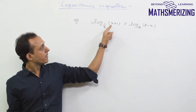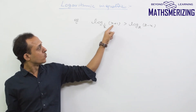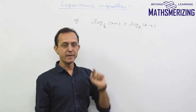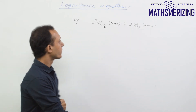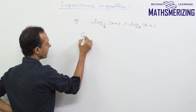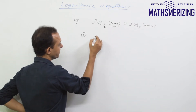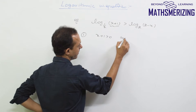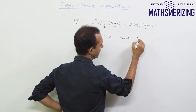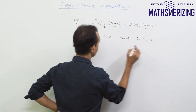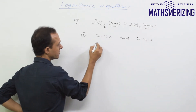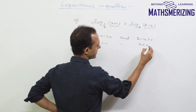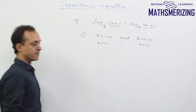Suppose the question is: log(x+1) to the base 1/2 is greater than log(2-x) to the base 2. First, I'll write the domain. For the first term, x+1 should be greater than 0, and for the second term, 2-x should be greater than 0. So x is greater than -1 and x is less than 2.